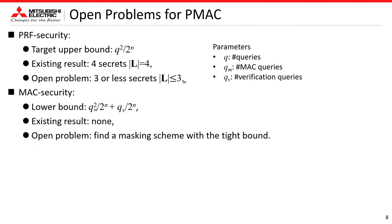This slide shows the open problems for PMAC. For PRF security, to achieve the length-free bound q-squared over 2^n, the previous work by Gaži et al. uses 4 secrets in the masking scheme. An open problem is to show whether there exists a masking scheme with 3 or fewer secrets with which PMAC achieves the length-free bounds. For MAC security, similar to the lower bound for PRF security, using the PHASH collision, the lower bound of MAC security involves both QM (number of MAC queries) and QV (number of verification queries). However, there is no result achieving the tight upper bound for MAC security of PMAC, so an open problem is to find a masking scheme for PMAC such that the upper bound equals this lower bound.